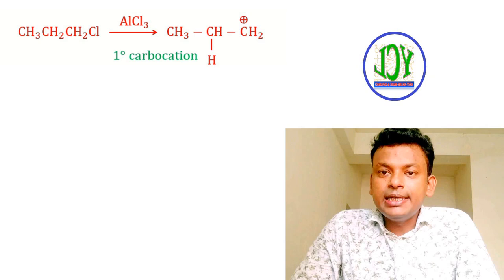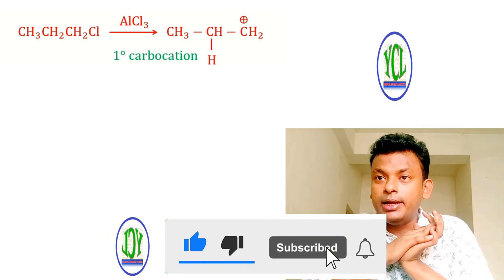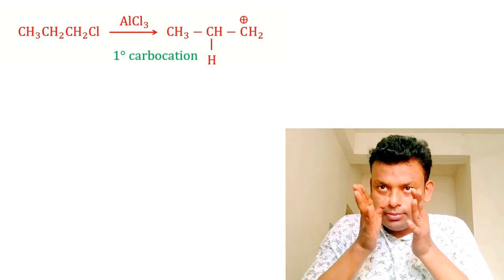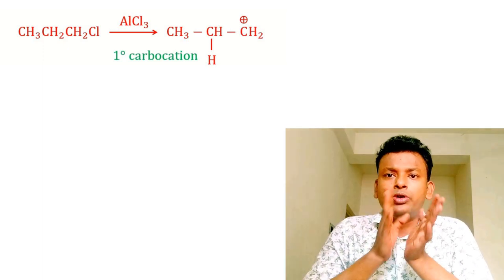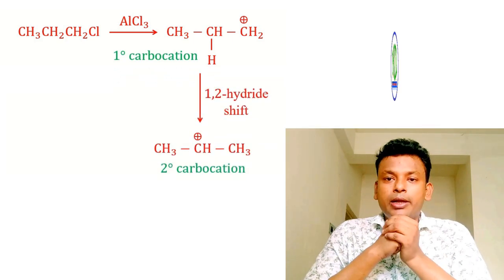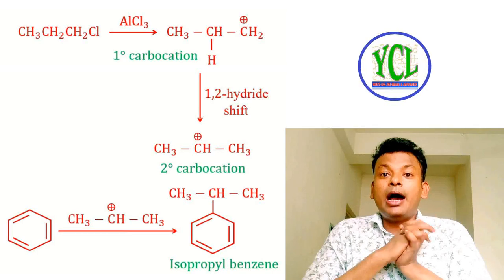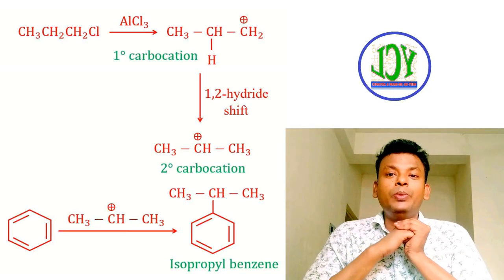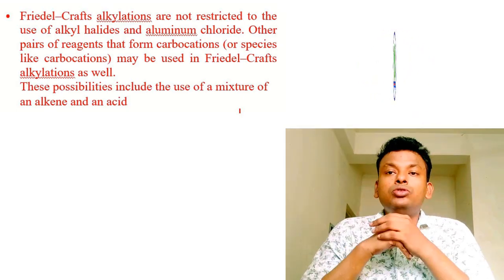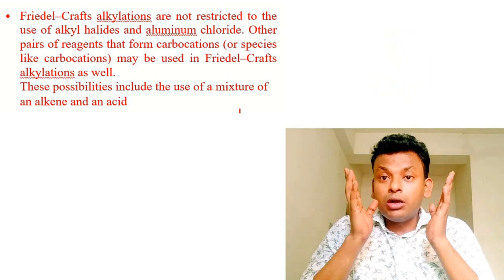Example of rearrangement: benzene + propyl chloride (CH₃CH₂CH₂Cl) + anhydrous AlCl₃ forms isopropylbenzene (cumene), not n-propylbenzene. Why? Propyl chloride reacts with AlCl₃ to form a primary (1°) carbocation, which is less stable than a secondary (2°) carbocation. A 1,2-hydride shift rearrangement occurs, forming the 2° carbocation, which then reacts with benzene to give isopropylbenzene (cumene).